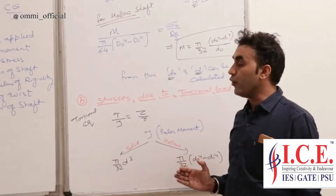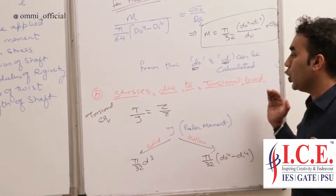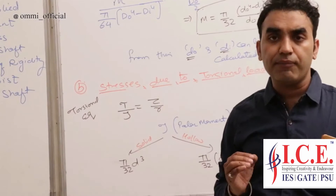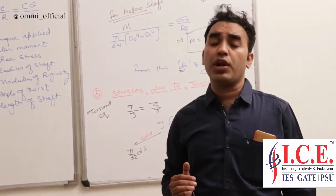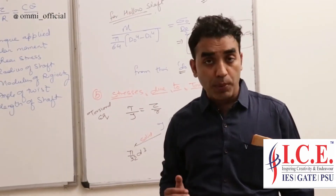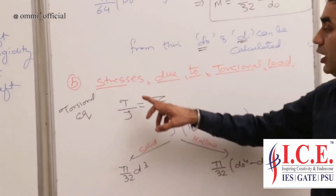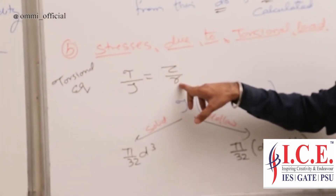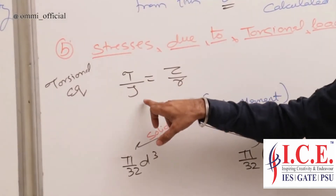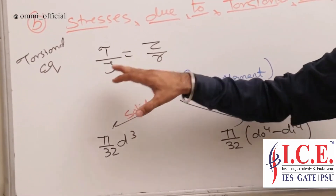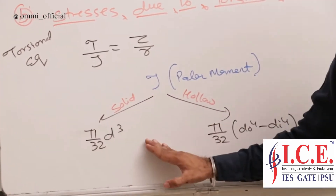Now we are moving to the second type: stress due to the torsional load. As we have mentioned the torsional equation, T by J equal to tau by R equal to C theta by L. Now, T by J equals tau by R. J is your polar moment, and for both solid and hollow shafts the values are respective.